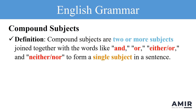Compound subjects are two or more subjects joined together with words like and, or, either or, and neither nor, to form a single subject in a sentence. Let's look at some examples.